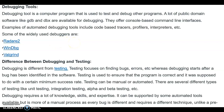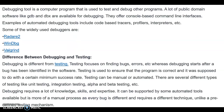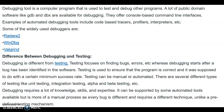Debugging is different from testing. Testing focuses on finding bugs and errors, whereas debugging starts after the bugs have been identified in the software. Testing is used to ensure that the program is correct and does what it is supposed to do with a certain minimum success rate. Testing can be manual or automated, with several types like unit testing, integration testing, and alpha and beta testing. Debugging requires a lot of knowledge, skills and expertise. It can be supported by some automated tools, but it is more of a manual process as every bug is different and requires different techniques, unlike a predefined testing mechanism.